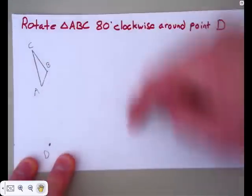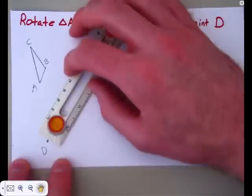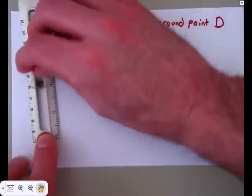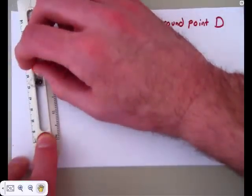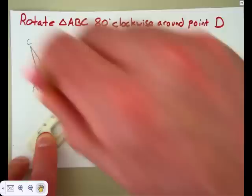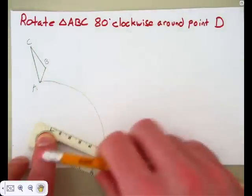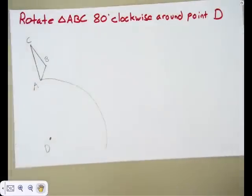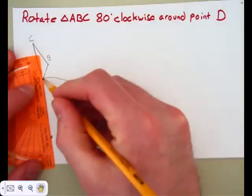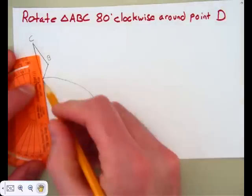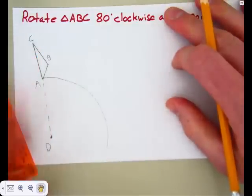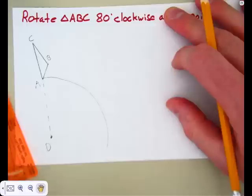Now, clockwise is going to rotate this way. So to do this, I'm going to put my compass here at point D. I'm going to set the radius to point A, lock it in place. As point A rotates around point D, it's going to be following this circular path. So I'm just making an arc.